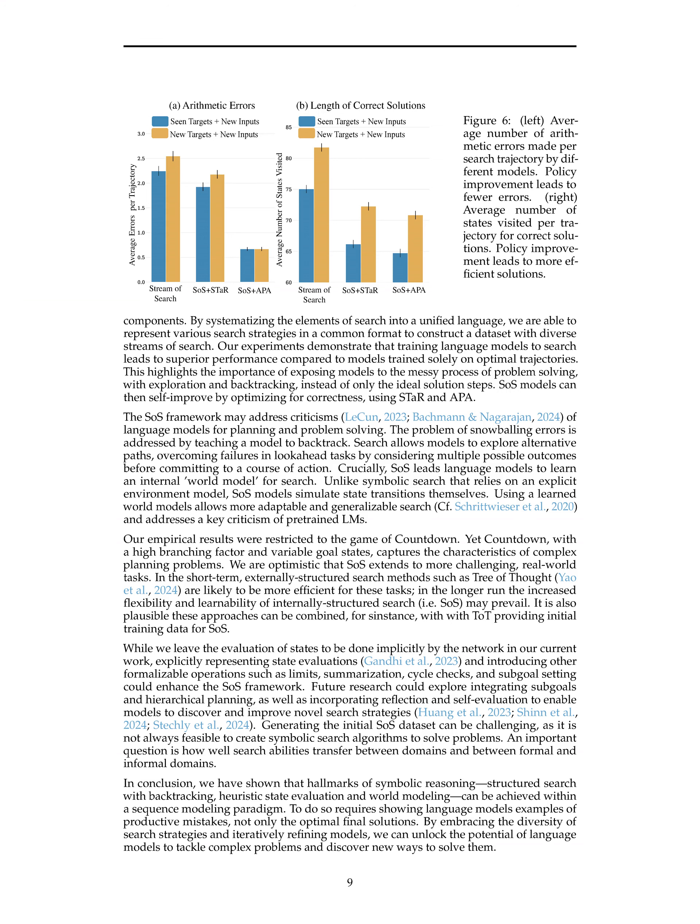What are the key components of the search process as defined in the paper? The key components include: the current state (S_C) being explored, the goal state (S_G) that is the target, and the state queue (S_Q) representing states at the frontier of the trajectory that haven't been explored yet.